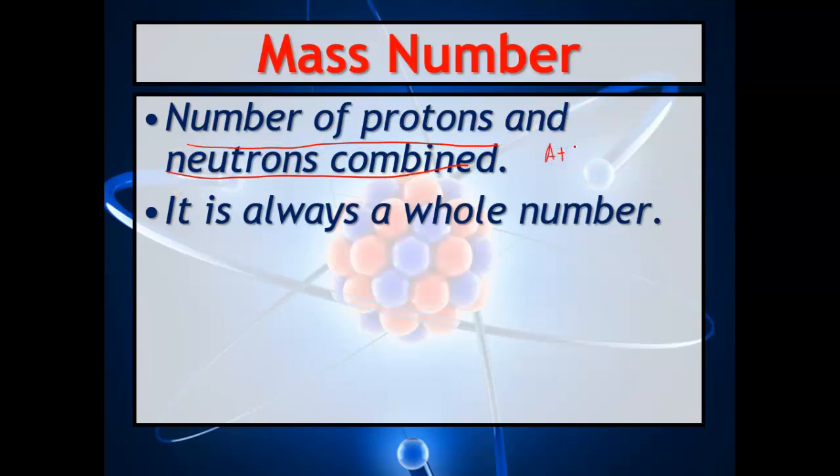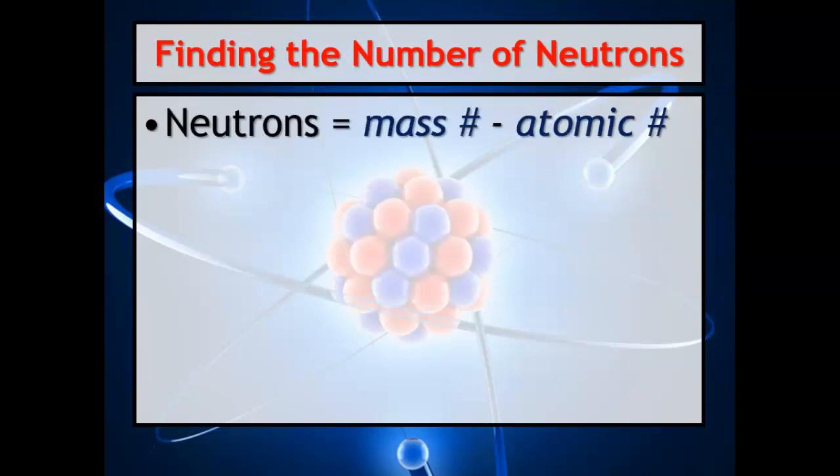Your atomic number plus your neutrons will give you your mass number. It is always a whole number because we have one proton and one neutron—we have a two.